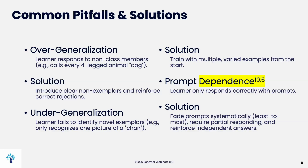Then there's undergeneralization — the learner fails to identify novel examples. For instance, they only recognize a chair when it's brown because all the chairs in their house are brown. They go to another house with a gray bench you can sit at the table in and don't call it a chair. To address undergeneralization, make sure you have multiple varied examples. A beanbag chair is one that can be hard — it looks completely different, but it is a chair.